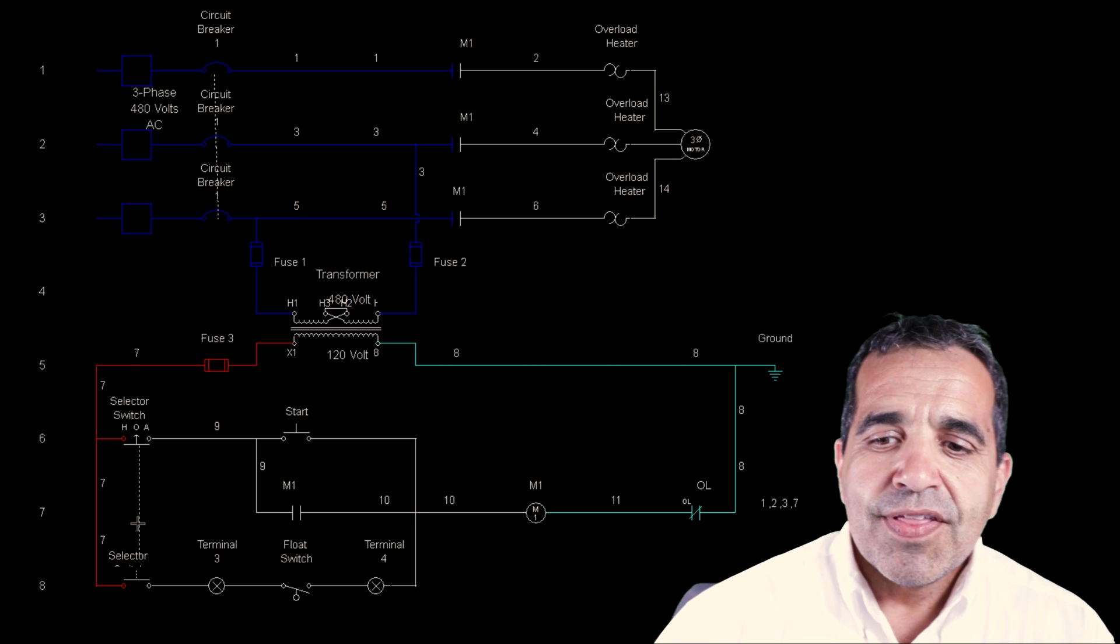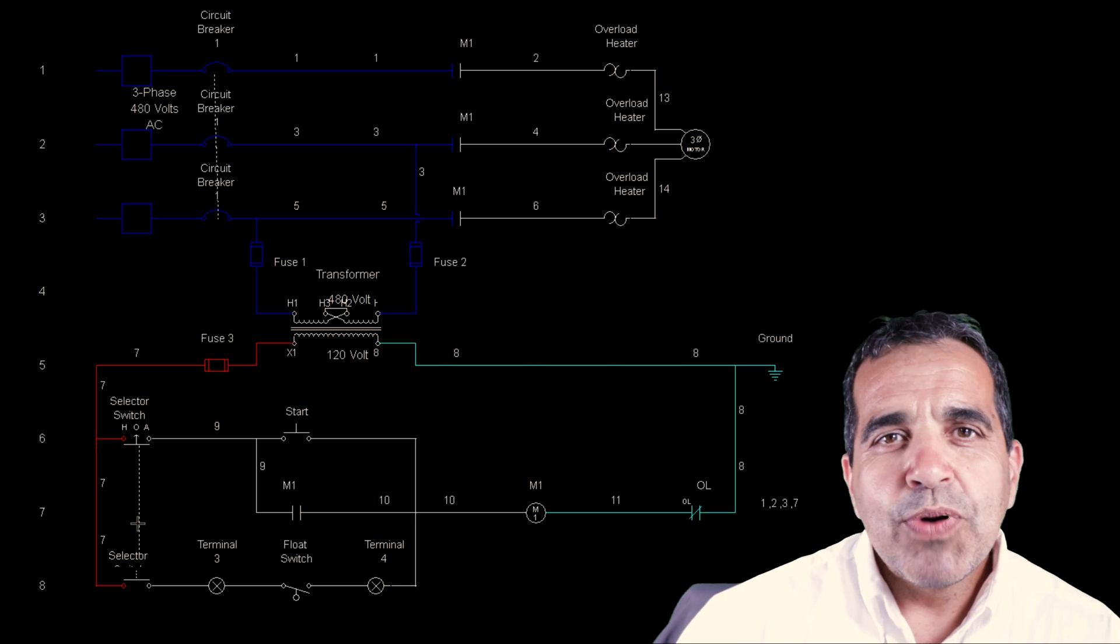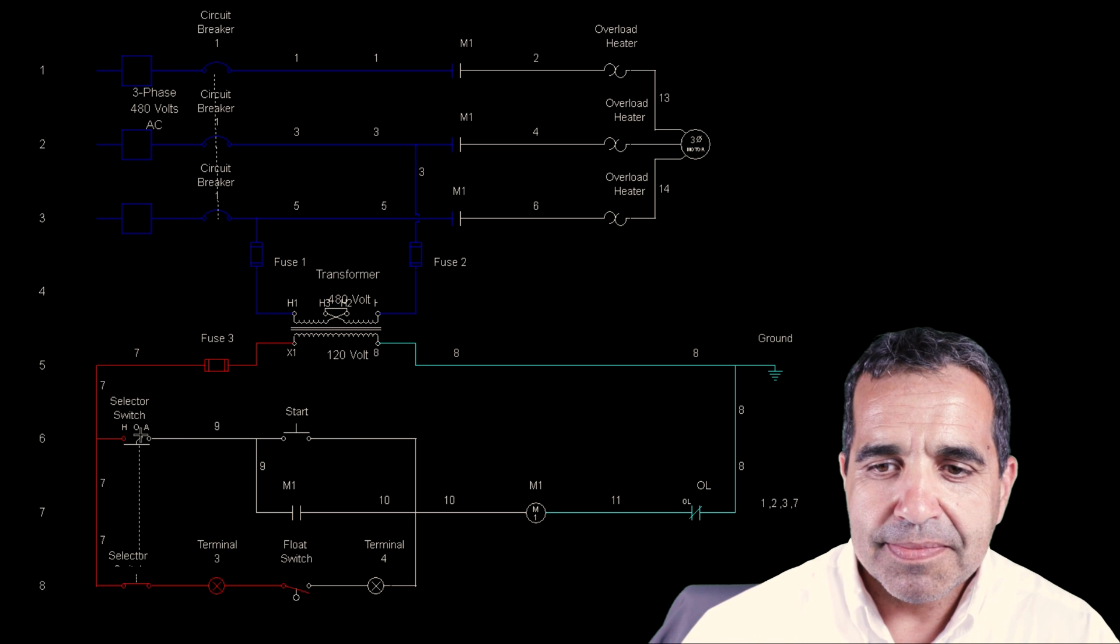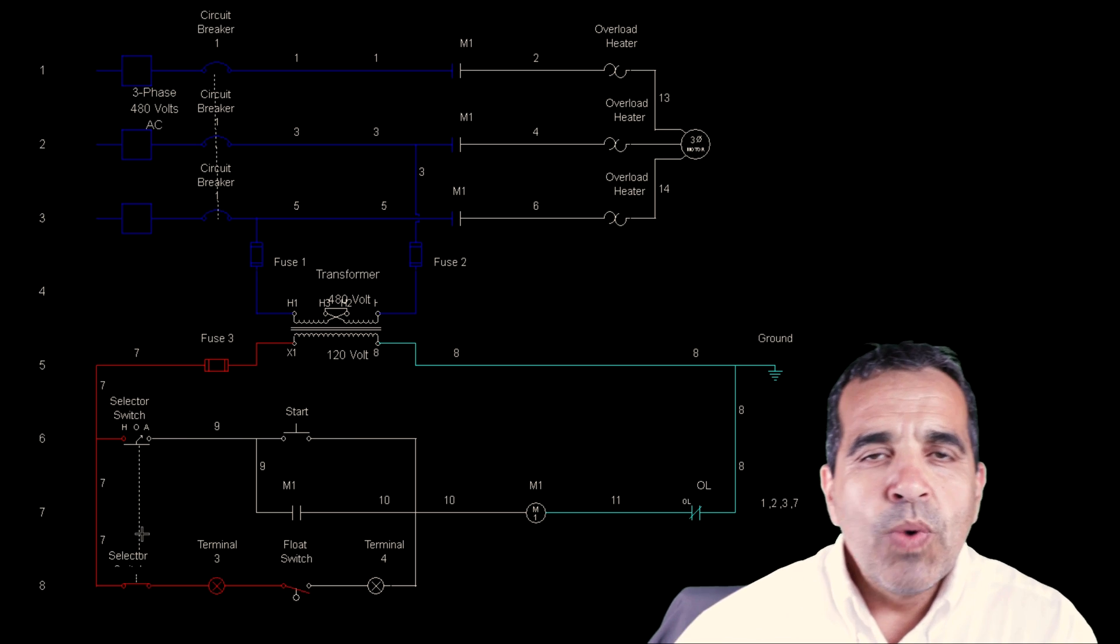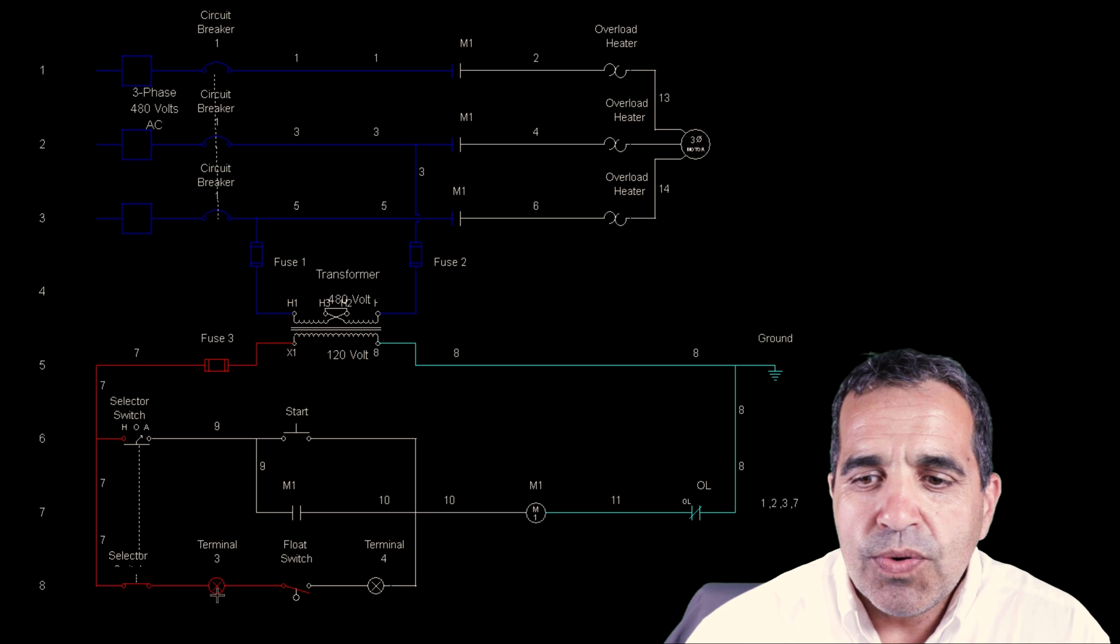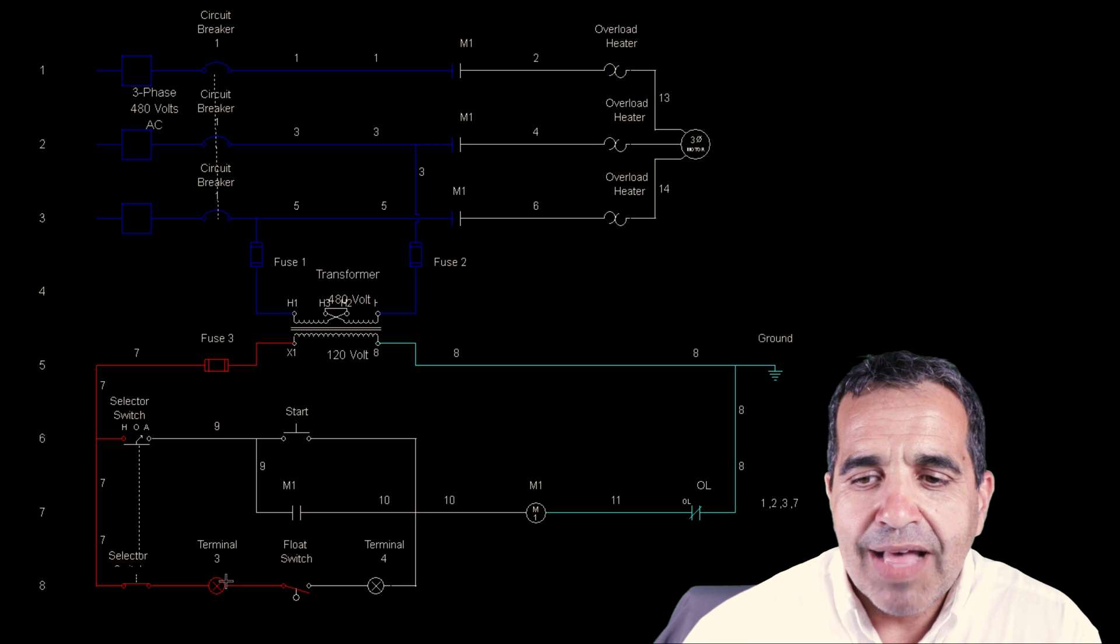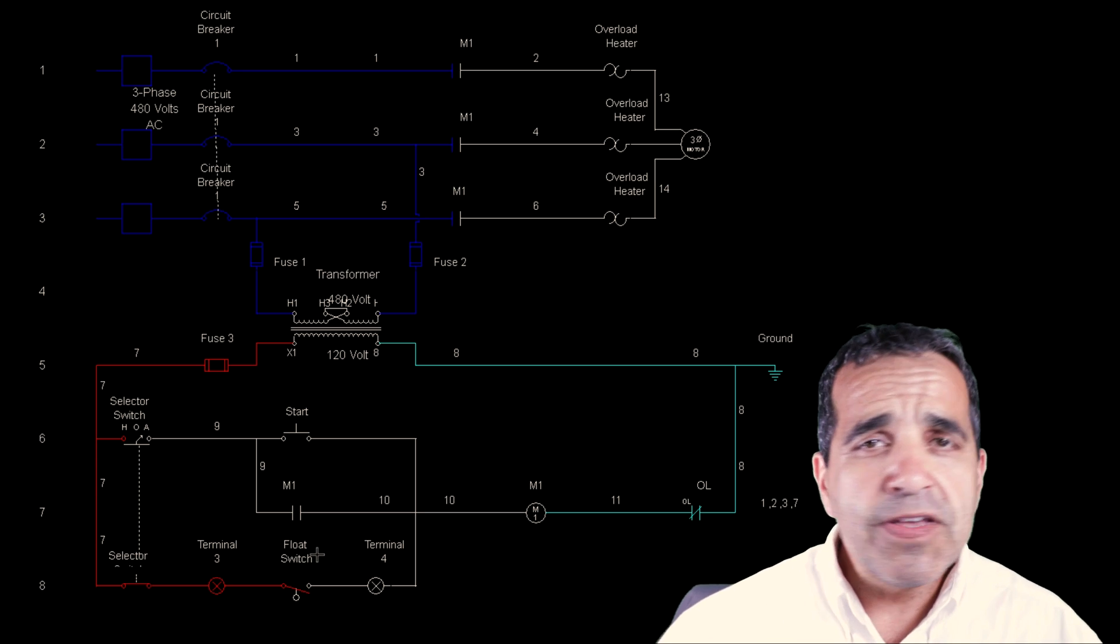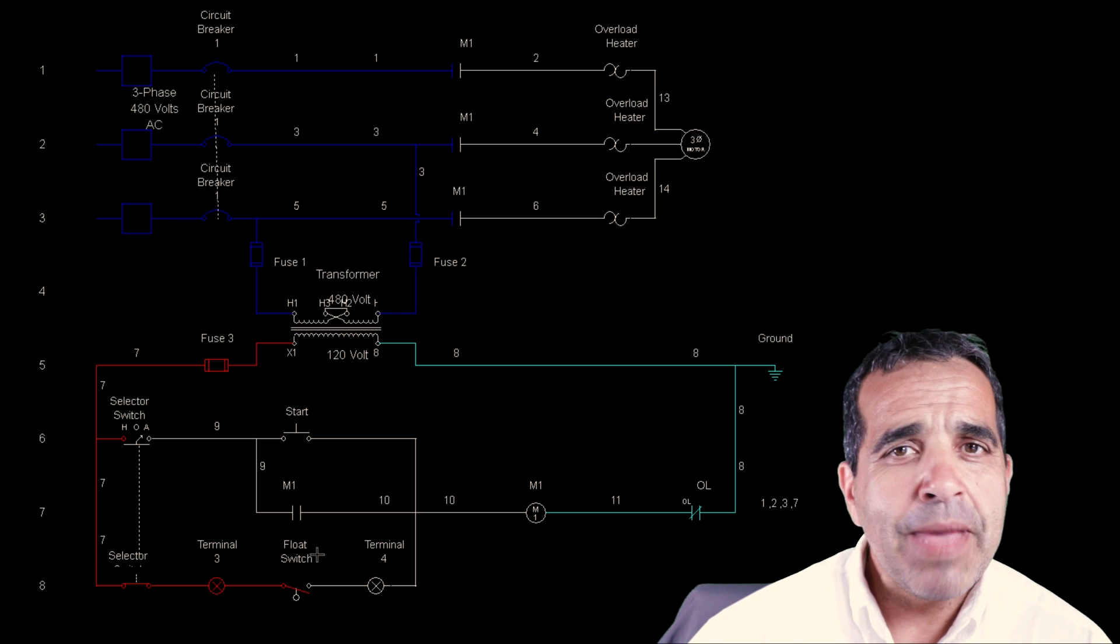In the case of the auto mode, when we put this into auto mode, we will not have power to our start button. We will have power through a terminal block. We will have power to a field device. Now this device, here it's a float switch. This is a field device.